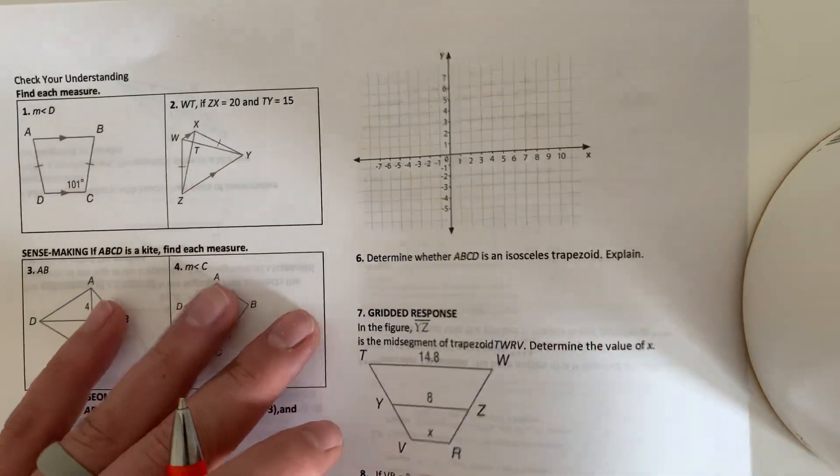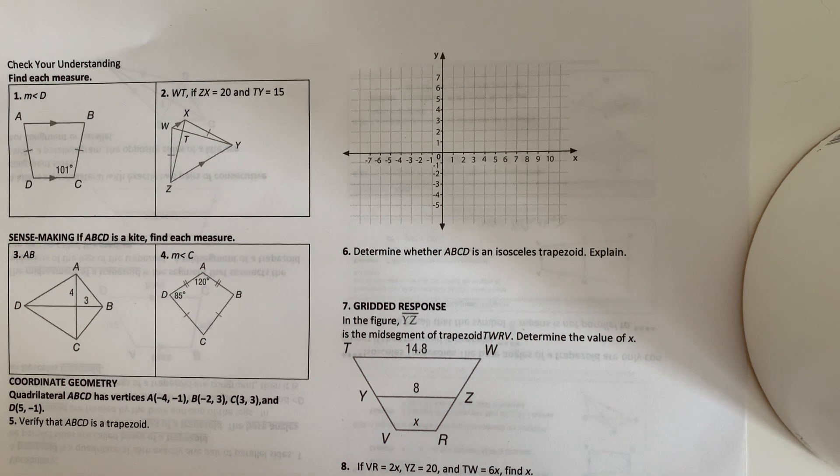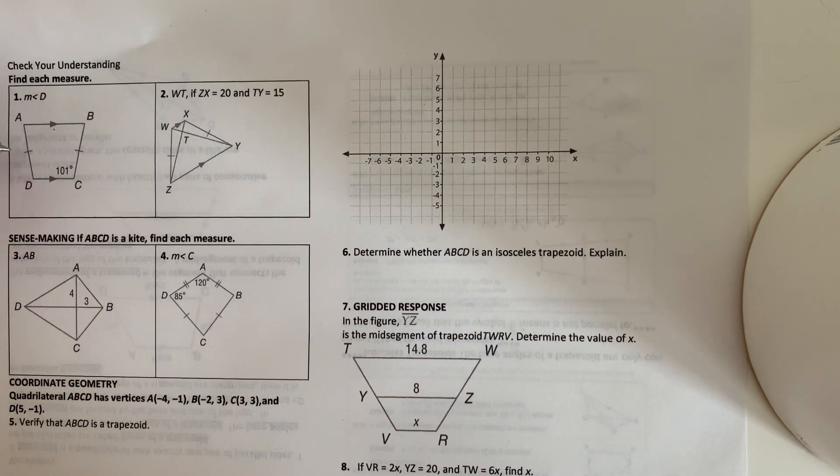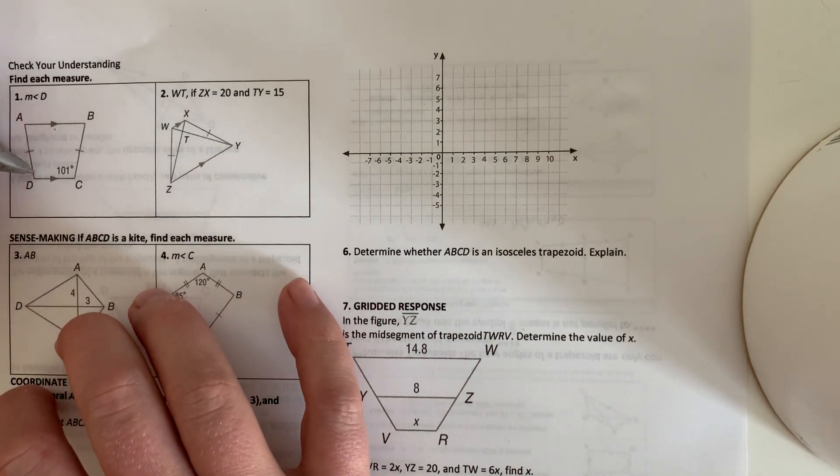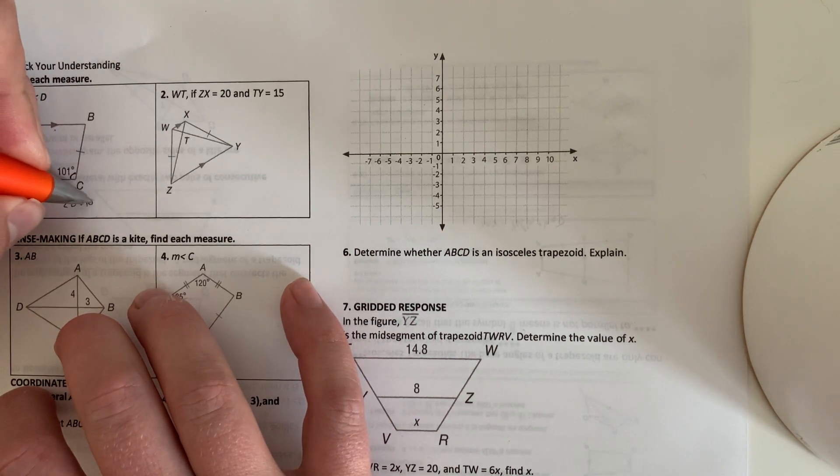So let's jump into some of these examples. All right, check our understanding here. If angle, we're trying to find a measure of angle D. If angle C is 101 and we have these marked parallel, these are congruent, then this is going to be that same side or same angle. So angle D is also going to be 101.